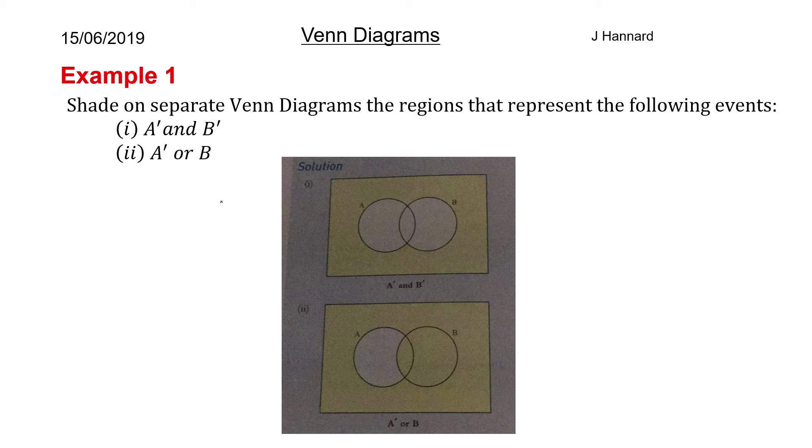A dash or B is so A doesn't happen or B happens. So we've got B happening, but that's not the only thing we're talking about. We're also talking about neither of them happening. All we want to know is that A doesn't happen. So there you go, and that is that.